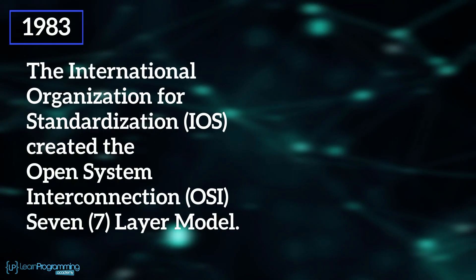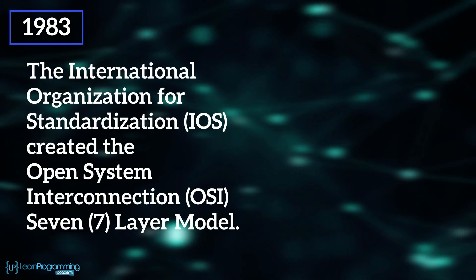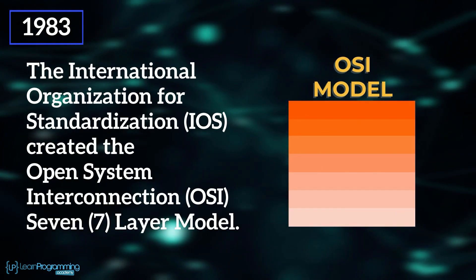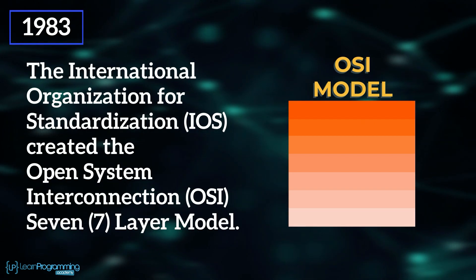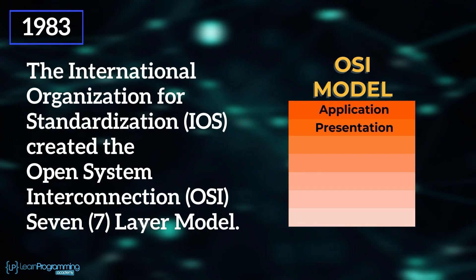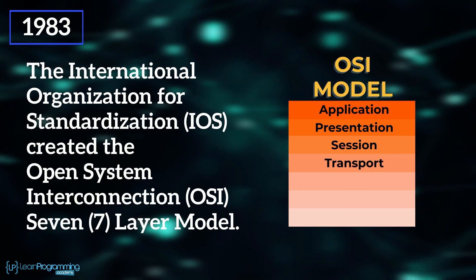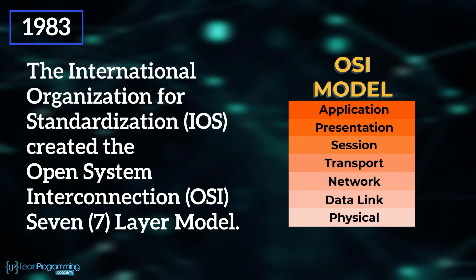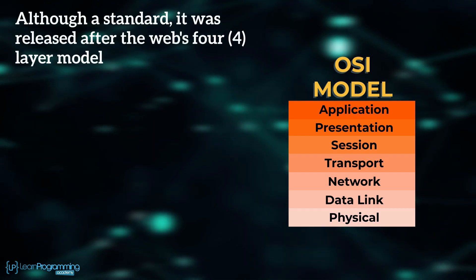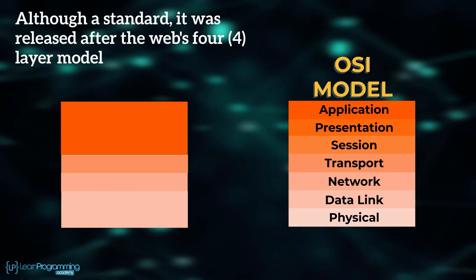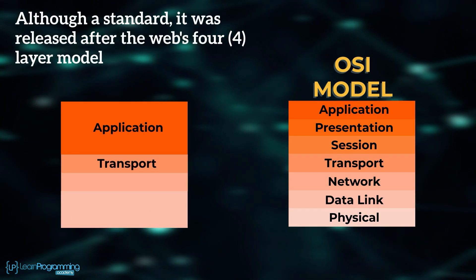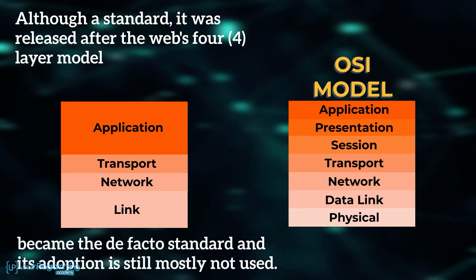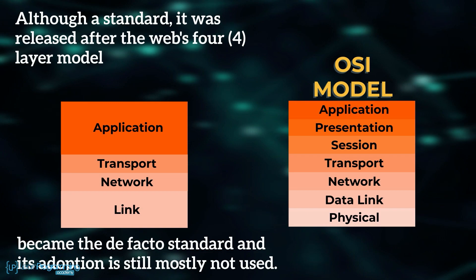In 1983, the International Organizations for Standardization (IOS) created the Open System Interconnection (OSI) seven-layer model standard, consisting of application, presentation, session, transport, network, data link, and physical software layers. Although a standard, it was released after the web's four-layer model — application, transport, network, and link software layers — had already become the de facto standard, and its adoption is still mostly not used.